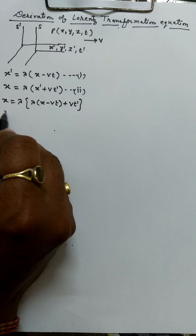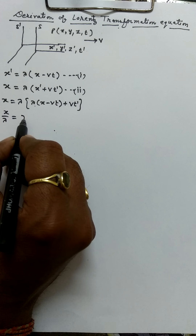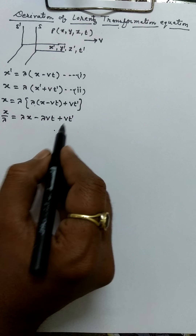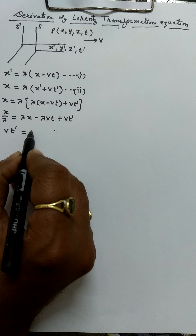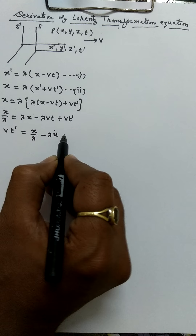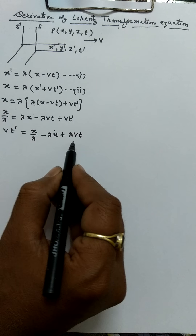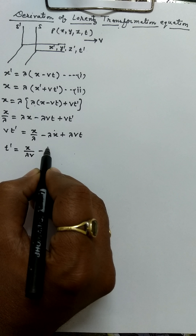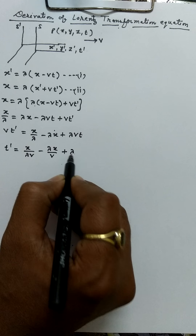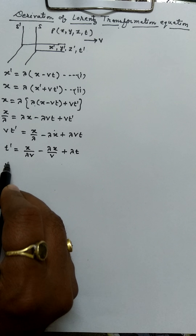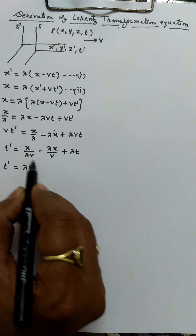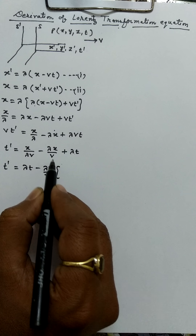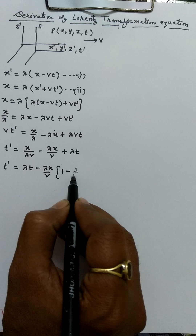Expanding: x upon lambda equals lambda x minus lambda vt plus vt dash. Rearranging, vt dash equals x upon lambda minus lambda x plus lambda vt, so t dash equals x upon (lambda v) minus lambda x upon v plus lambda t. Collecting terms: t dash equals lambda times t minus lambda x upon v, with the factor (1 minus 1 upon lambda squared). This is equation number 3.